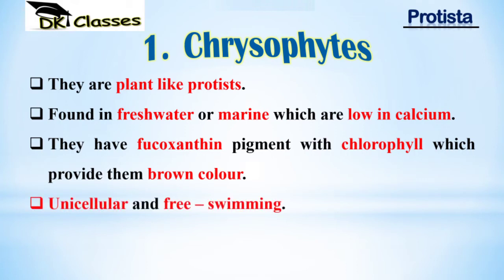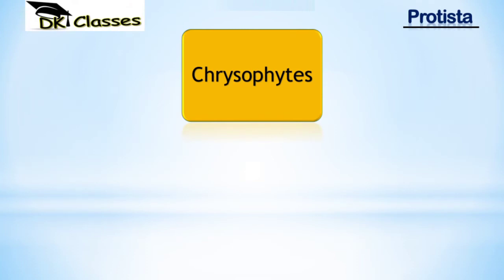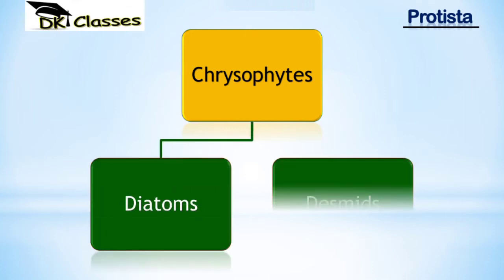Chrysophytes are free-living; some are unicellular and some are multicellular. They can store their food in the form of oily carbohydrates, and that oily carbohydrate is called chrysolaminarin — just as plants store food as starch, chrysophytes store food as chrysolaminarin. Chrysophytes are further divided into two classes: diatoms and desmids.